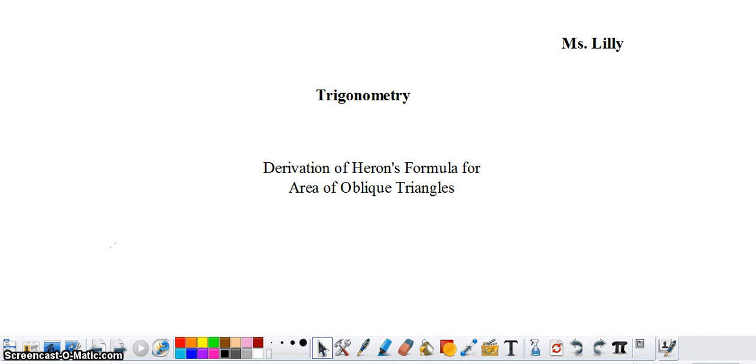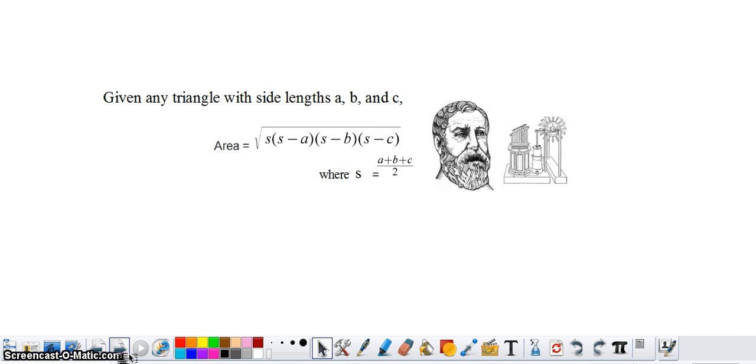Today we will be deriving Heron's formula for the area of oblique triangles using three sides. Heron's formula says that given any triangle with side lengths A, B, and C,